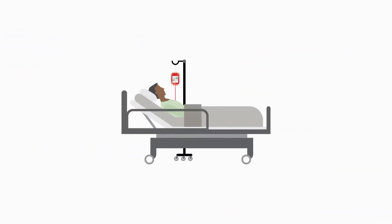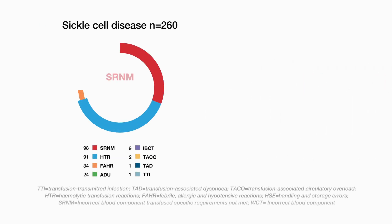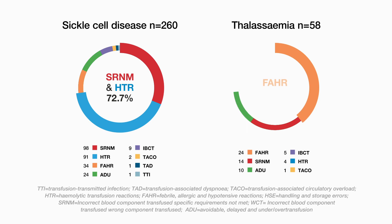In these cases, the patient is at an increased risk of avoidable haemolytic transfusion reaction following an anamnestic response, or avoidable alloimmunisation. Looking at data over the past 10 years, errors reported to SHOT mainly involve haemolytic transfusion reactions and specific requirements not met for patients with SCD, and febrile, allergic and hypertensive reactions and specific requirements not met for patients with thalassemia.